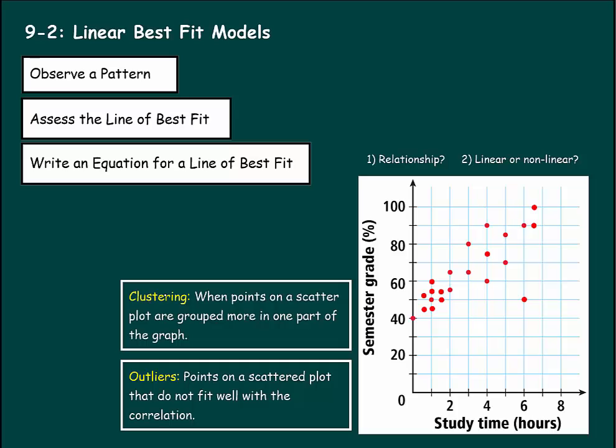A couple words we're going to learn here. Clustering is one of them. Clustering is when points on a scatter plot are grouped in one part of the graph. So in this case, I would call this area clustering. That means we had a lot of students that only studied for one, maybe two hours, and they generally got the same grade.